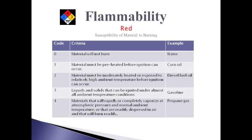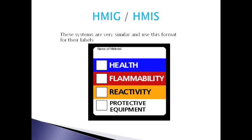Now let's move on to another popular labeling system. The Hazardous Material Identification Guide, HMIG, is a labeling system developed and sold through Lab Safety Supply Company. The Hazardous Material Information System, HMIS, is a labeling system developed by the National Paint and Coatings Association, NPCA, and sold through Labelmaster Incorporated. Both systems use a label with four color bars and a space at the top where the name of the chemical should be written. Although the details of how the numbers are assigned may vary somewhat between the systems, this is essentially the same overall scheme as is used by the NFPA system.